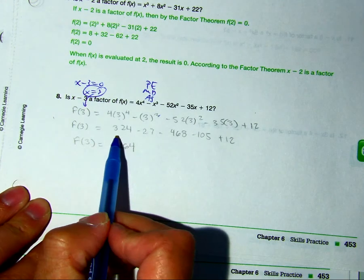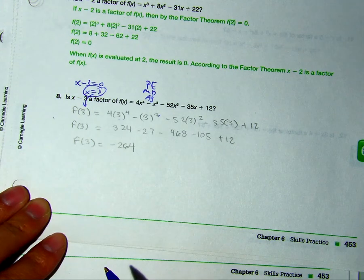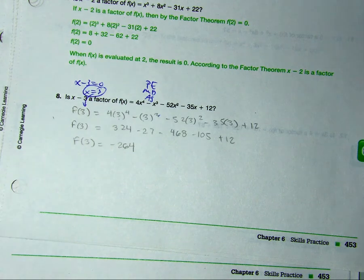And class, when you add all those up together, do you get negative 264? Yes. And we're only missing the sentence.